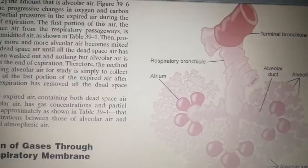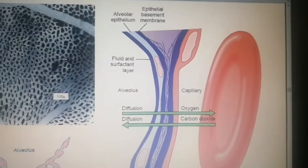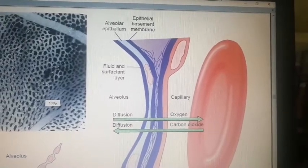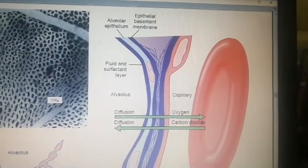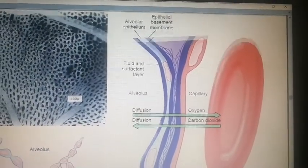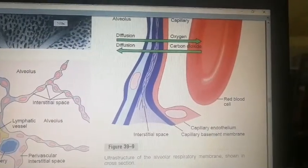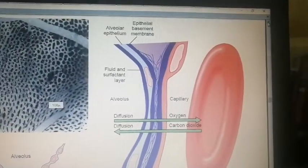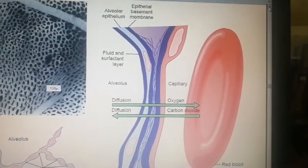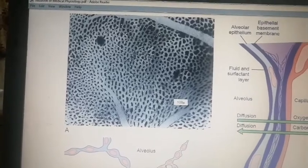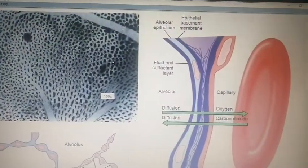Now, what is the respiratory membrane? You can see here there is a first layer — the fluid and surfactant layer — then the alveolar epithelium, then the epithelial basement membrane. You can also see the interstitial space, then the capillary. There are actually a total of six layers, and you can see the red blood cells here.